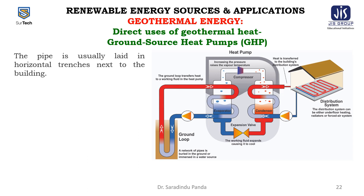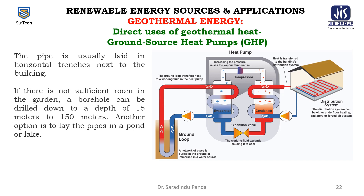The pipe is usually laid in horizontal trenches next to the building. If there is insufficient room, a borehole can be drilled to a depth of 15 to 150 meters, or the pipes can be laid in a pond or lake. The ground loop transfers heat to the working fluid in the heat pump — the evaporator side, condenser side, expansion valve, and compressor. Increasing the pressure raises the vapor temperature via the compressor, and the heat is transferred to the building's distribution system.